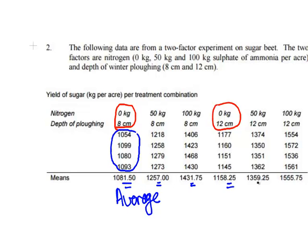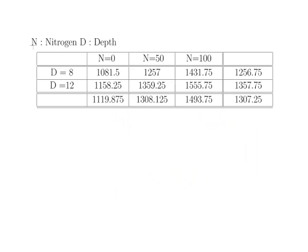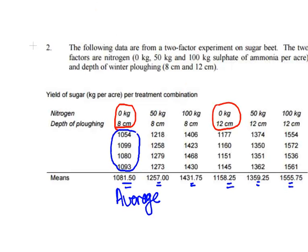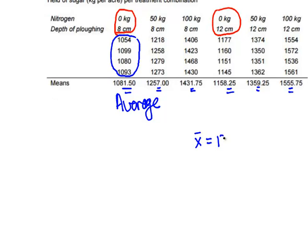The average of each grouping is as follows. What we are going to do is reconstruct a new table based on those means. Those are the means for each combination of nitrogen and depth — the mean of the four replicate measurements. The overall mean of all 24 measurements is 1307.25. We have 24 measurements: four replicates for each of the six groups.